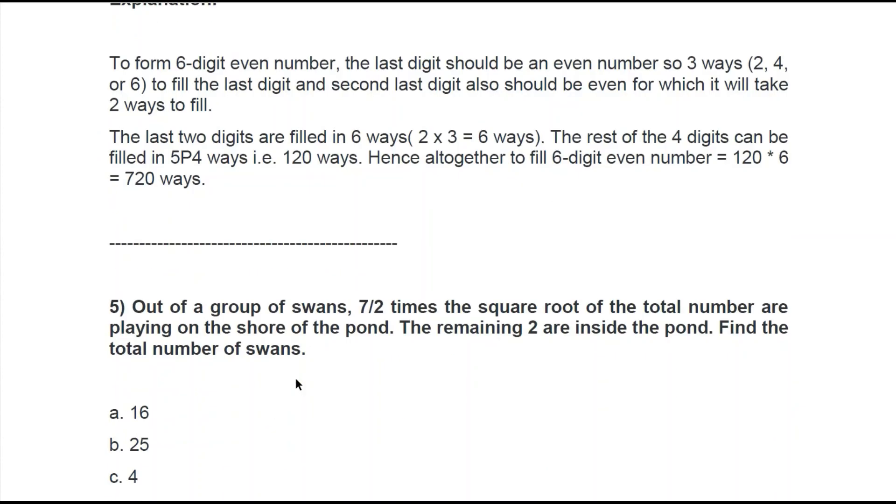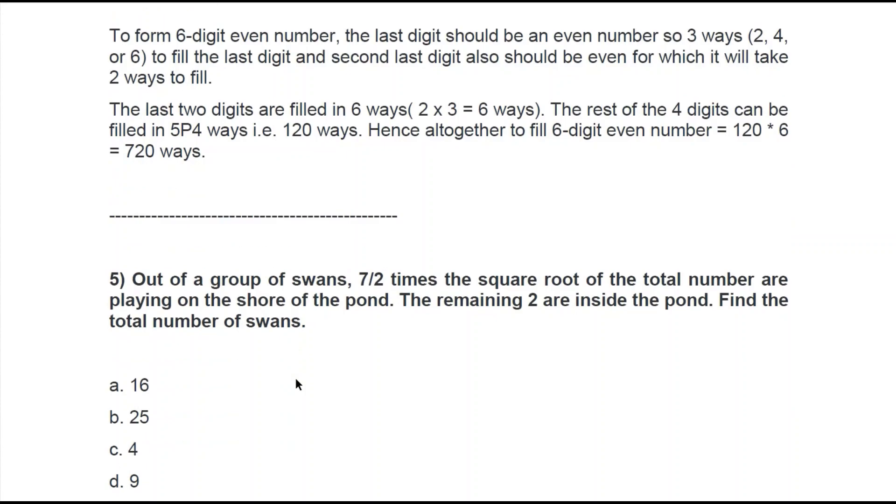Question 5: Out of a group of swans, 7/2 times the square root of the total number are playing on the shore of the pond. The remaining 2 are inside the pond. Find the total number of swans. Let's try with 16 first. If 7/2 √x = 16 - 2.